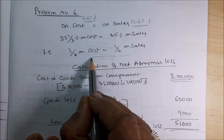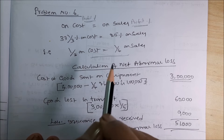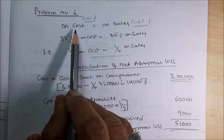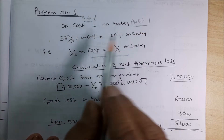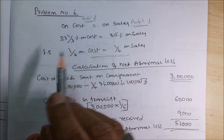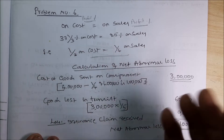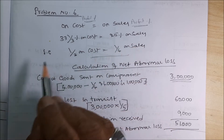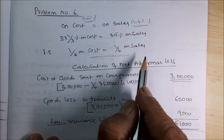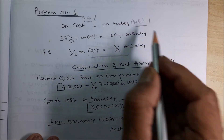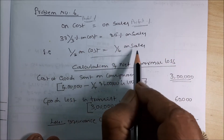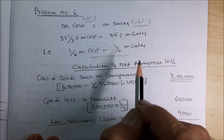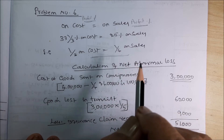You should know this throughout your career — on cost percentage equals on sales profit percentage. For example: 25 percent on cost equals 20 percent on sales; 33 percent on cost equals 25 percent on sales; 50 percent on cost equals 33 one-third percent on sales. You must be careful — you are supposed to take cost, not invoice price or selling price.